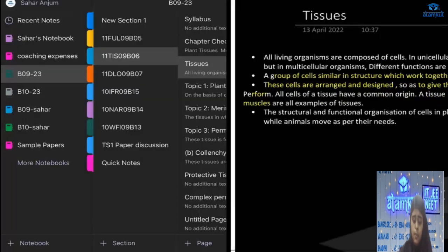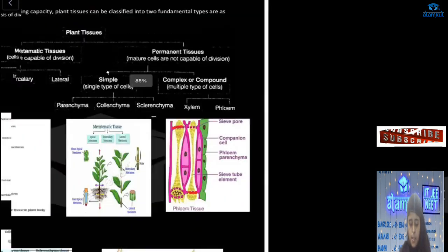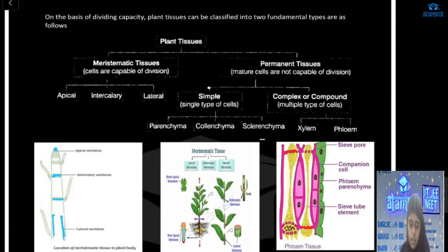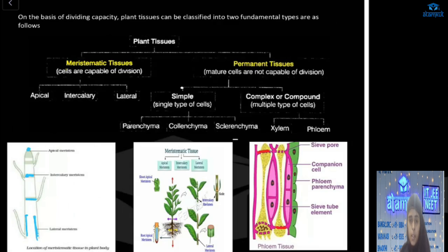Now let's talk about plant tissues. Plant tissues are mainly divided into two parts: we have meristematic tissues and we have permanent tissues. Meristematic tissues are further divided into apical, intercalary, and lateral meristem. Permanent tissues are divided into simple and complex. In simple, we have parenchyma, collenchyma, and sclerenchyma. In complex, we have xylem and phloem.